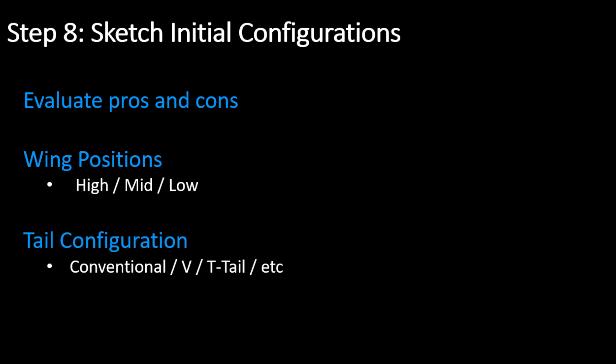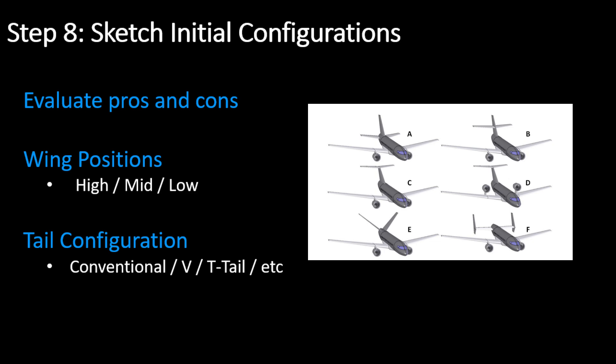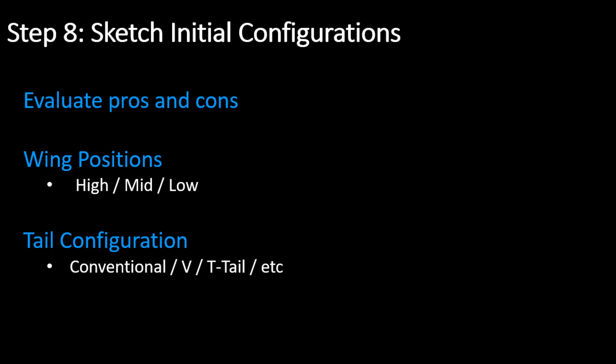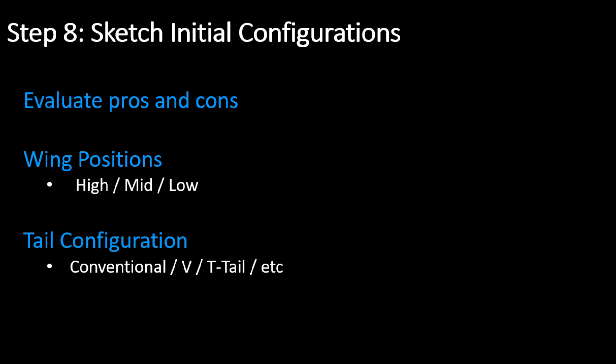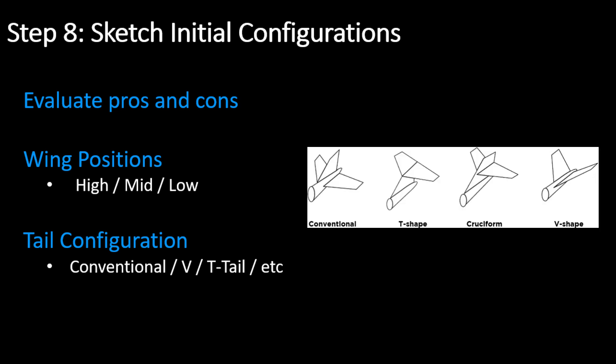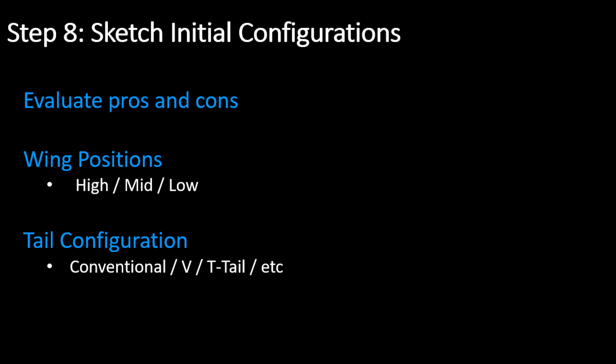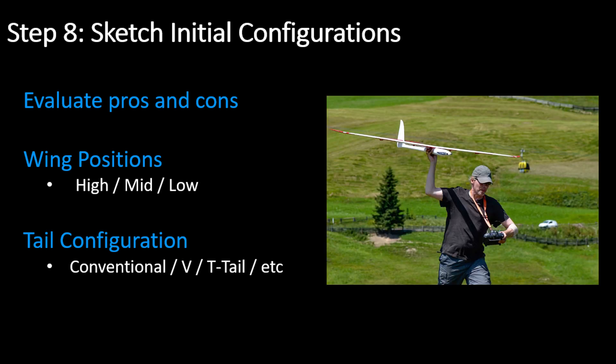Step 8: Sketch initial configurations and evaluate the pros and cons of each. There may be multiple possible designs for the same parameters. You can change the wing position — high, mid, or low wing configuration — as well as the motor or engine position and tail configurations, such as conventional, T-tail, or V-tail. For example, when designing for a hand-launchable model, high wing placement will be advantageous for ease of handling and belly landings.